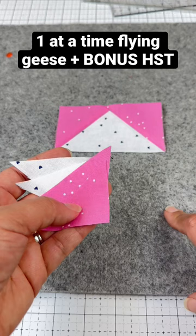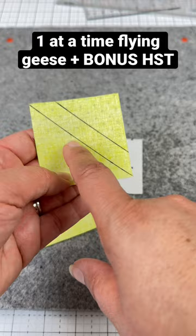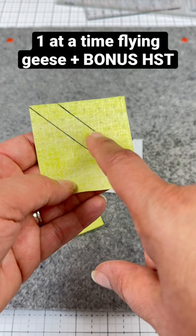So not only will you need a diagonal line down the center of your stitch and flip block, but you'll also draw a line a half an inch away from the original line.